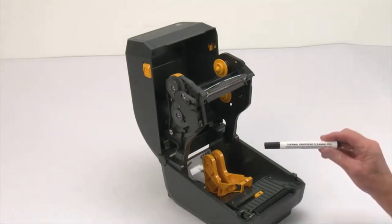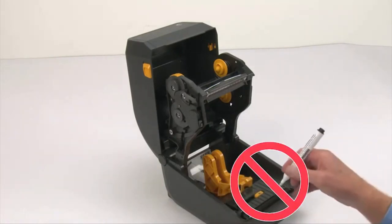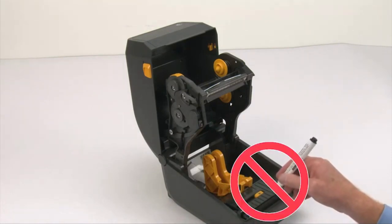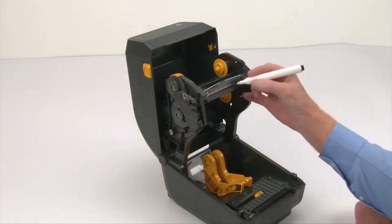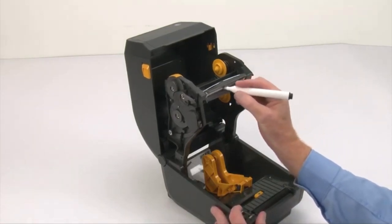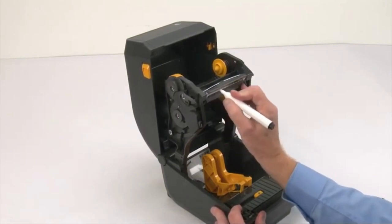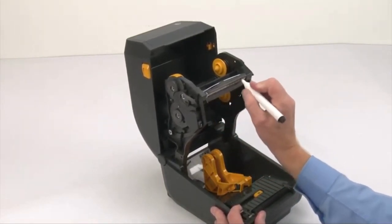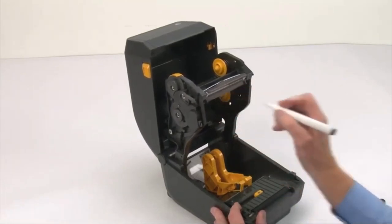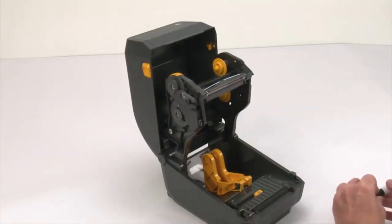Use an approved thermal printhead cleaning pen. Wipe from the center of the printhead towards the outside edges. Rub the pen over the dark stripe several times until clean. Let the printhead dry before installing media and closing the cover.